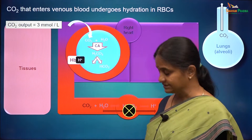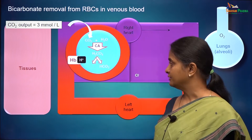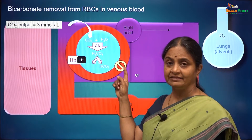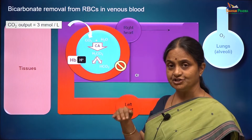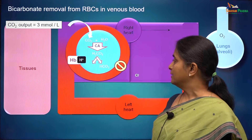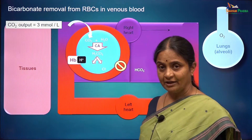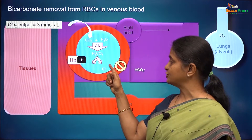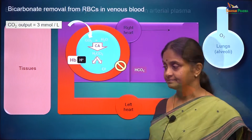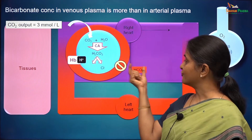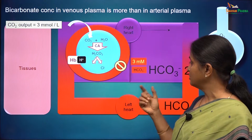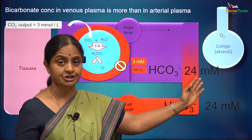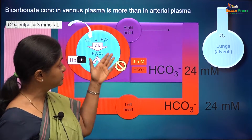How does bicarbonate get removed from red blood cells? This is the famous Hamburger chloride shift. There is the band 3 protein, an anion exchanger on the red blood cell membrane. As bicarbonate concentration within the cell builds up, it is moved to plasma and chloride ions are taken in to maintain electroneutrality. These bicarbonate ions from red blood cells are added over and above the bicarbonate already in venous blood, which was 24 millimoles per litre from arterial blood.